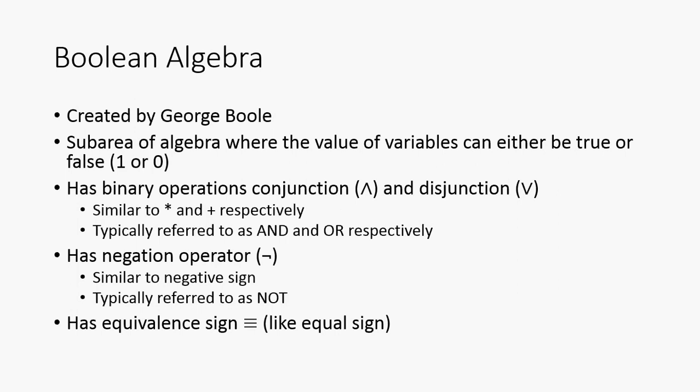It has binary operations for conjunction and disjunction. A conjunction is referred to as AND, and it's similar to multiplication in normal algebra. And a disjunction is typically referred to as OR, and it's similar to addition.